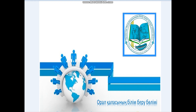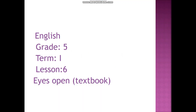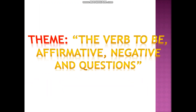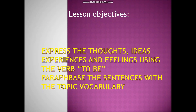Good day, dear students. I'm glad to see you today. Let's start our lesson — Term 1, Lesson 6. The theme is the verb 'to be': affirmative, negative, and questions. The lesson objectives are to express sorts, ideas, experiences, and feelings using the verb 'to be', and to paraphrase sentences with topic vocabulary.